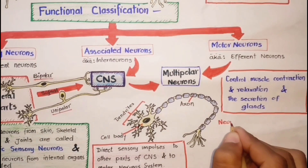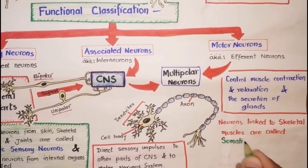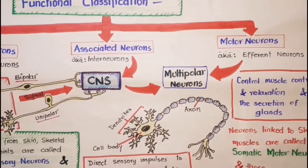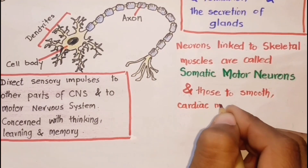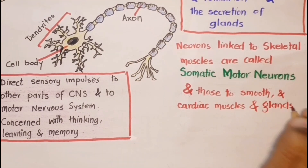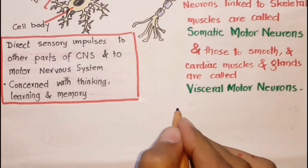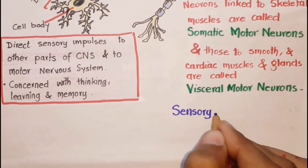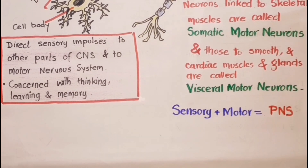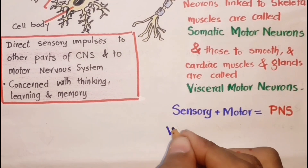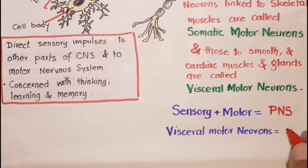Motor neurons linked to skeletal muscles are called somatic motor neurons, and those to smooth muscles, cardiac muscle, and glands are called visceral motor neurons. Sensory and motor neurons make up the peripheral nervous system, and visceral motor neurons form the autonomic nervous system.